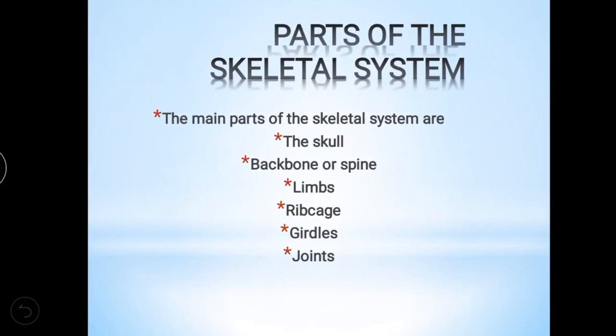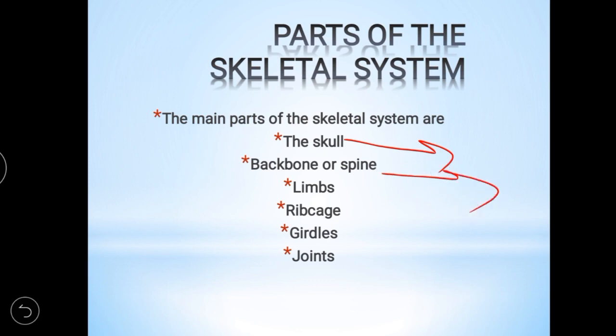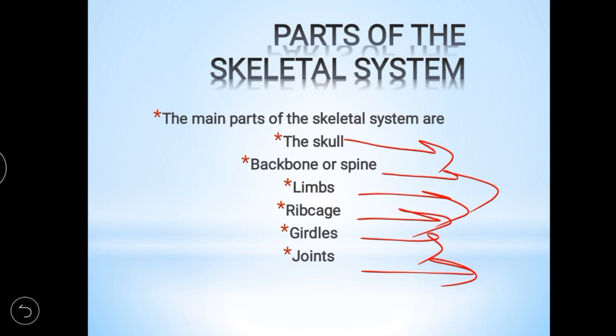Now we are going to learn in detail about the skeletal system. The parts of the skeletal system are: the skull, backbone or spine, limbs, ribcage, girdles, and joints — beginning from the top of our head to the bottom.